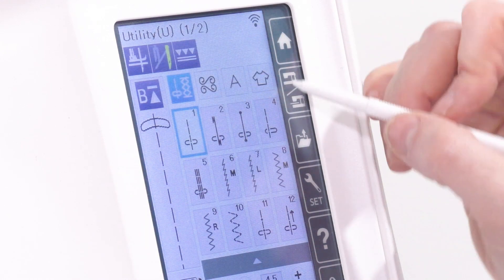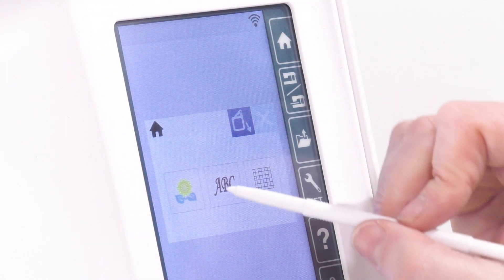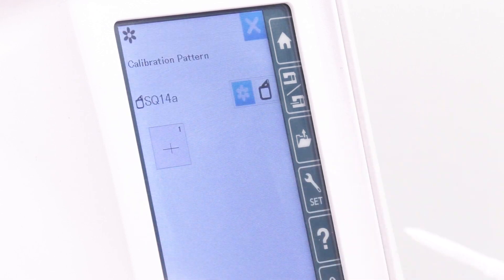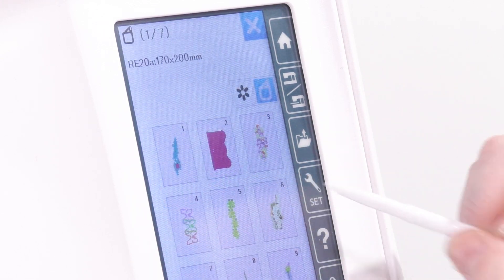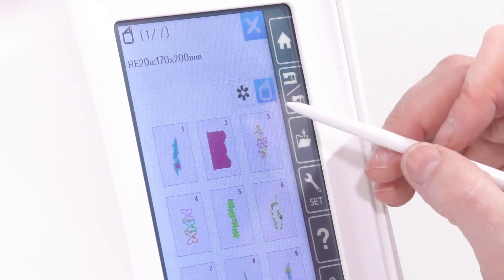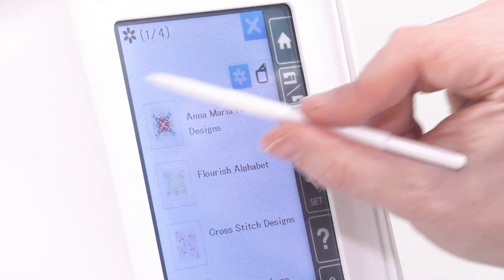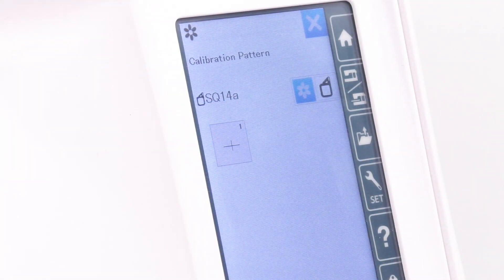Now that embroidery is set up, I'm going to go into the designs. That's the flower icon. I'm going to choose designs that are for the largest hoop. And when I'm in the larger design menu, select calibration pattern.